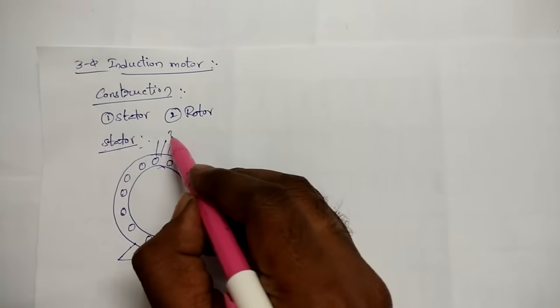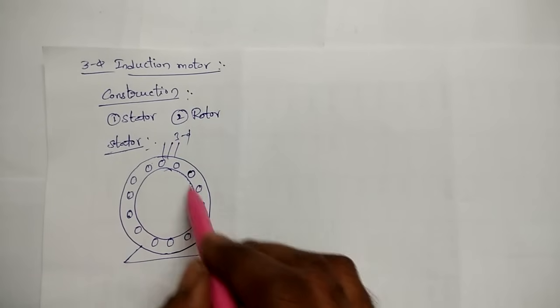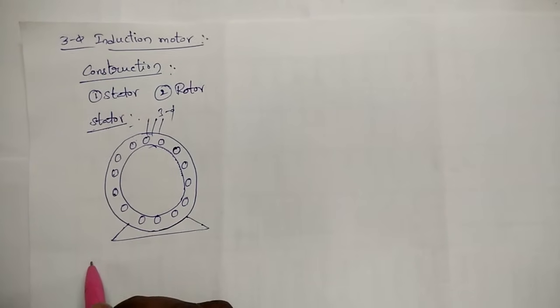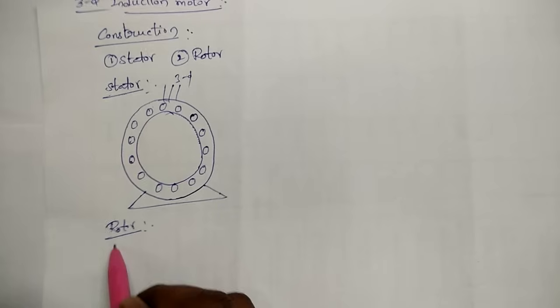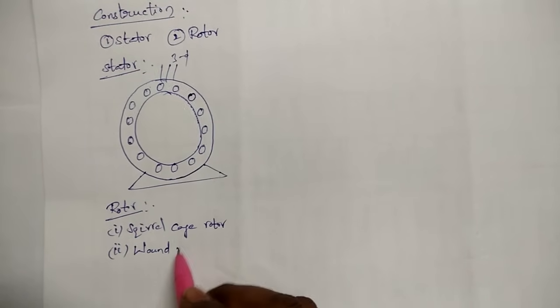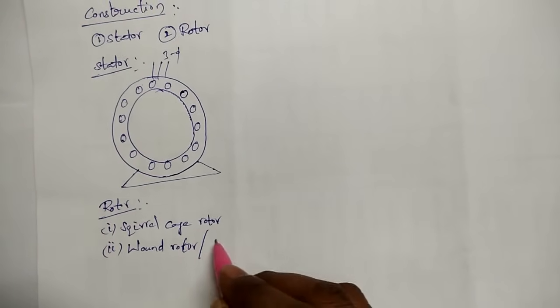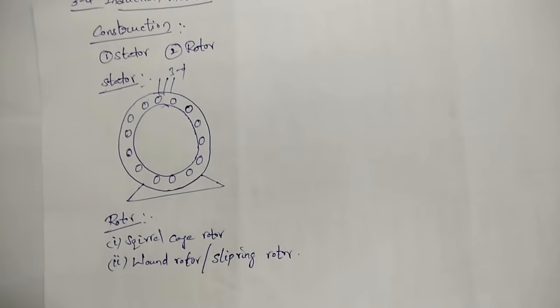When you give supply to the stator winding, a flux is produced and that flux rotates in the air gap at synchronous speed. Now let us come to the rotor. There are two types of rotors: the first one is the squirrel cage rotor, and the second one is the wound rotor. The wound rotor is also called a slip ring rotor.